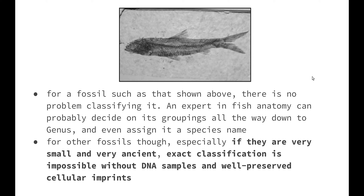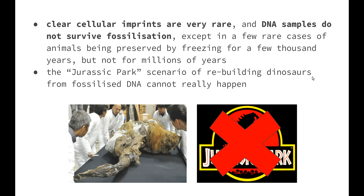For a fossil such as that shown above, there's no problem classifying it. An expert in fish anatomy can probably decide on its groupings all the way down to the genus and even assign it a species name. For other fossils, especially if they are very small and very ancient, exact classification is impossible without DNA samples and well-preserved cellular imprints. Clear cellular imprints are very rare and DNA samples do not survive fossilization, except in a few rare cases of animals preserved by freezing for a few thousand years — but not for millions of years. The Jurassic Park scenario of rebuilding dinosaurs from fossilized DNA could not really happen at the moment. There's nothing saying that the ability to extract DNA from fossilized organisms couldn't improve — particularly those mosquitoes trapped in amber — but currently where we're at in science, it's probably not a realistic expectation.